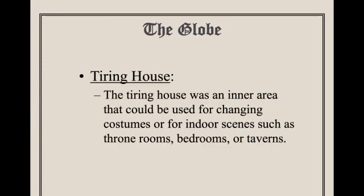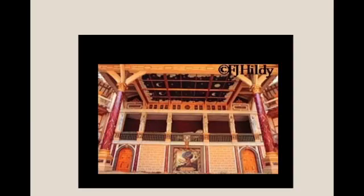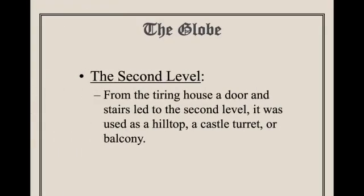The Tiring House was an inner area that could be used for changing costumes, or for indoor scenes such as throne rooms, bedrooms, or taverns. You can see there are doors that actually open and close. The second level from the Tiring House had a door and stairs leading up, and that could be used in the play as a hilltop, a castle turret, or a balcony.